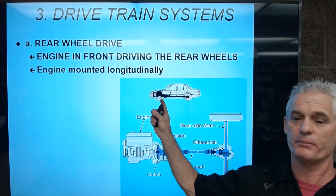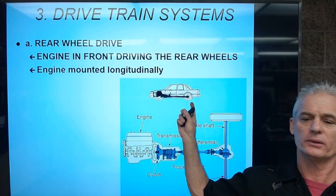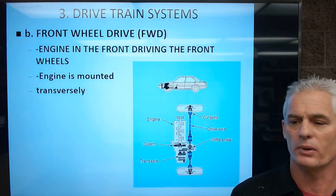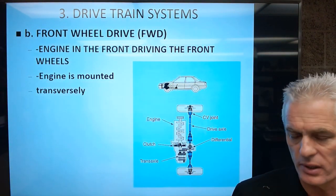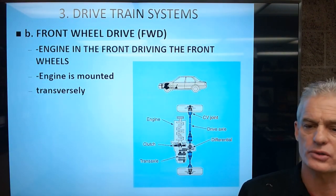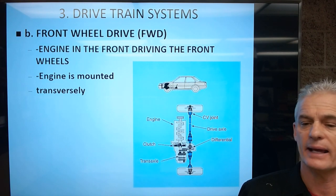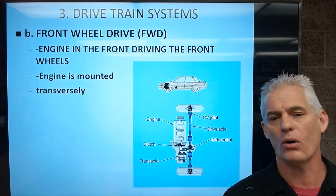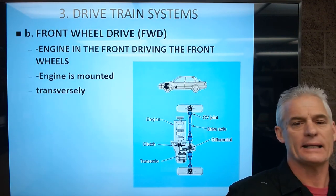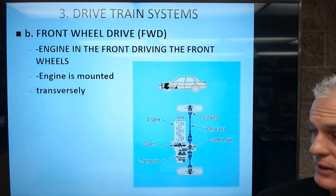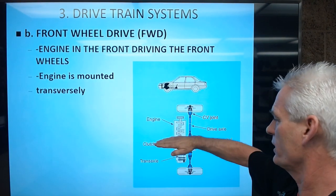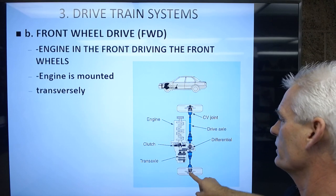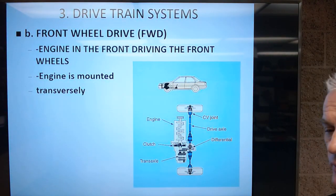Rear-wheel drive has the engine up front driving the rear wheels, and front-wheel drive has the engine up front driving the front wheels. A notable exception is Subarus: they used to be front-wheel drive with a front engine, but it was not transverse-mounted — it was longitudinally mounted. Now all Subarus are all-wheel drive, with the engine still in the front in a longitudinal orientation. The engine goes into a transmission/differential that drives the front wheels, and then out the back of the transmission, it drives the rear wheels.